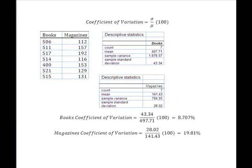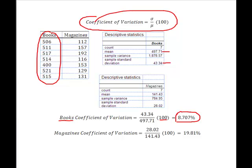So all I've done is I've just dropped the necessary numbers into this formula. And for the books, I'm using the standard deviation of 43.34, the mean of 497.71 times 100. And I know now that the percentage or the degree of variation in this data right here for books is 8.707%. I've turned around and done the exact same thing for my magazines. Except I've used the standard deviation of 28.02, the mean of 141.43 times 100, converted it into a percentage, and I come up with 19.81.